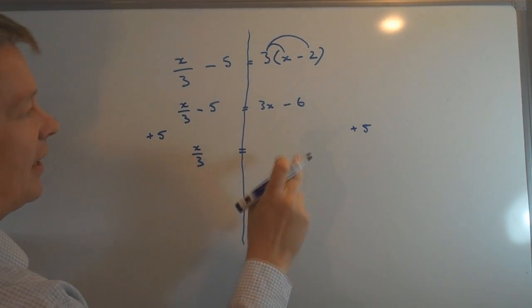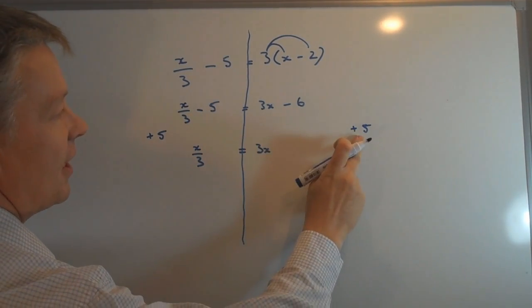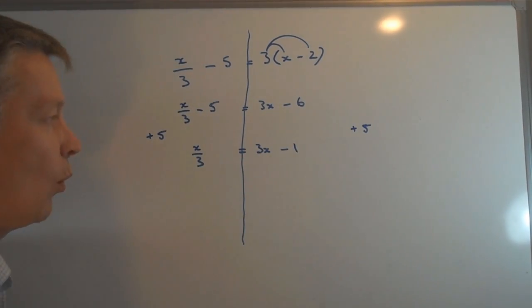And on this side I've got 3x which remains the same, and I've got minus 6 plus 5, so minus 1.